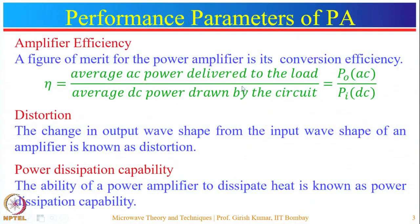In a power amplifier, power means how much AC power is delivered to the load. This AC power comes from the supply or battery. One important figure of merit is conversion efficiency — how effectively the circuit converts DC power into AC power delivered to the load. It is defined as the ratio of the average AC power delivered to the load to the average DC power drawn from the supply.